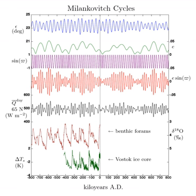This is 10,000 years before the solar forcing that the Milankovitch hypothesis predicts. This is also known as the causality problem, because the effect precedes the putative cause.